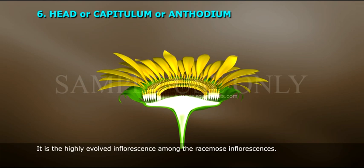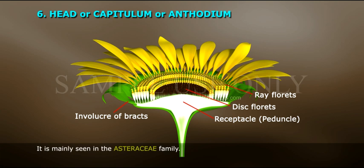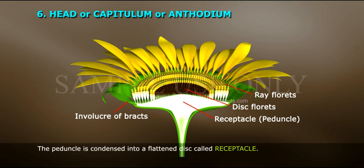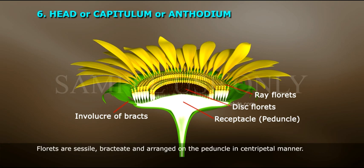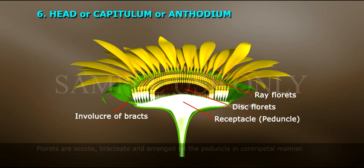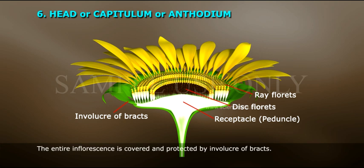Head or capitulum or anthodium: It is the highly evolved inflorescence among the racemose inflorescences. It is mainly seen in the Asteraceae family. The peduncle is condensed into a flattened disc called the receptacle. Flowers are small and reduced, called florets. Florets are sessile, bracteate, and arranged on the receptacle in a centripetal manner. The entire inflorescence is covered and protected by an involucre of bracts.